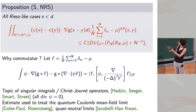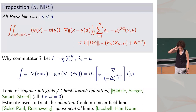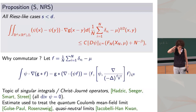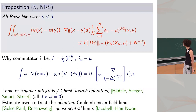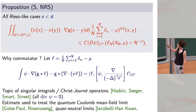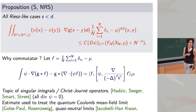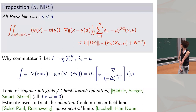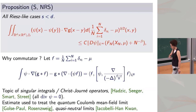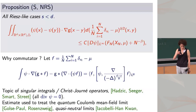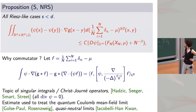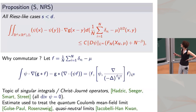Once you have the commutator inequality, you have your Gronwall argument. This was quickly used to treat the quantum Coulomb mean field limit — works of François Golse, Matt Rosenzweig — and quasi-neutral limits, which are different regimes giving different limiting equations. This commutator inequality is used as the main building block in those results.